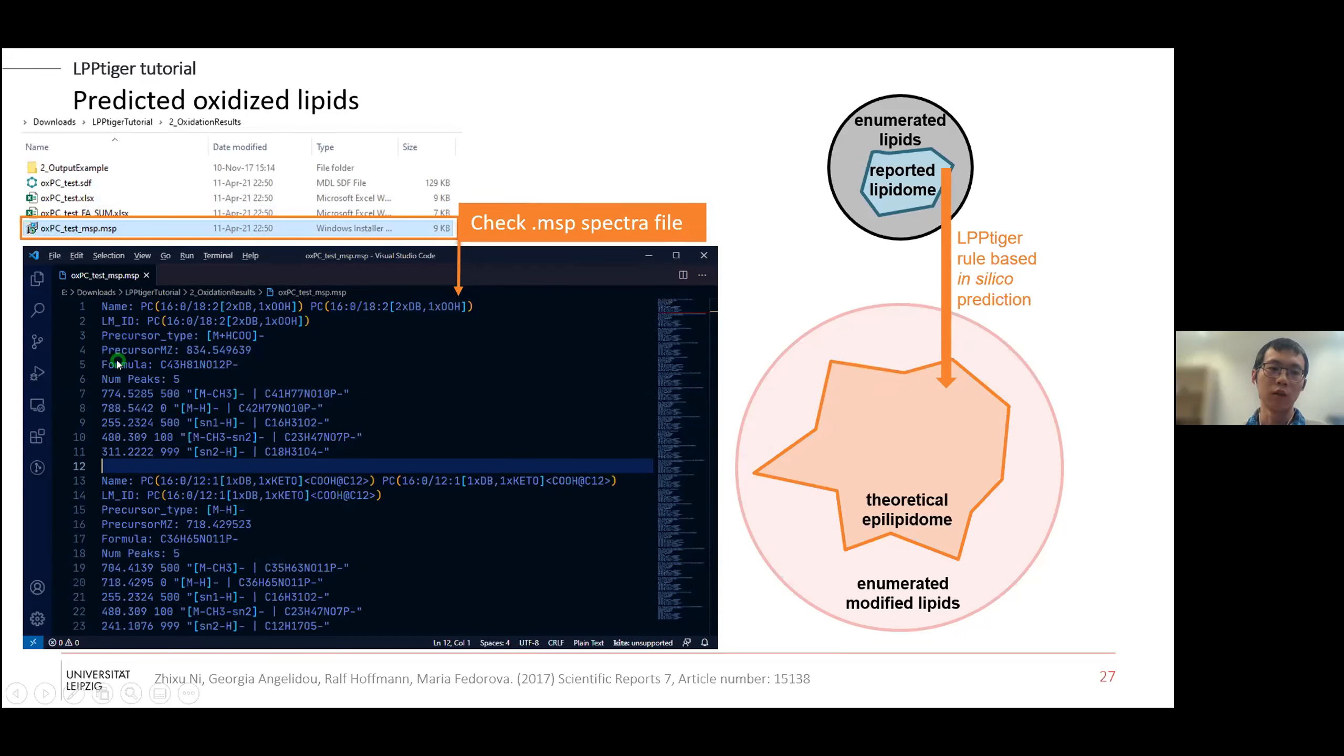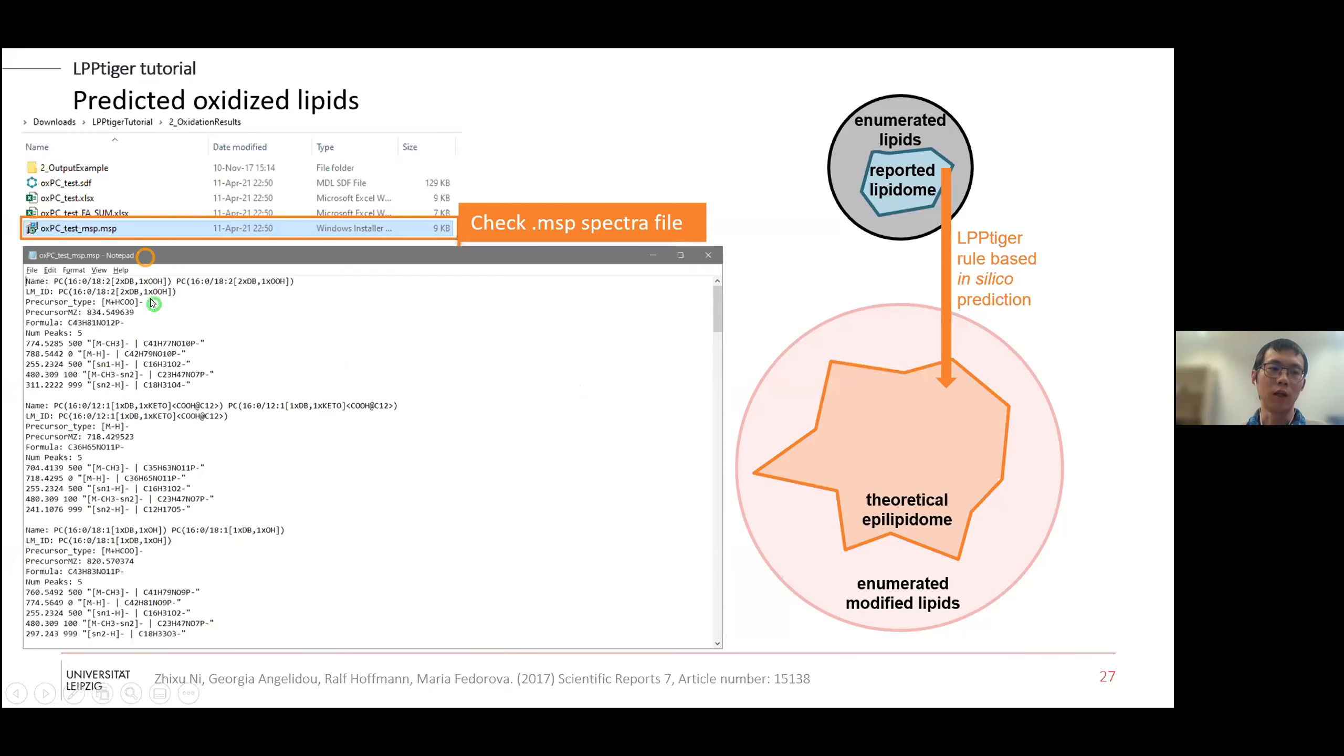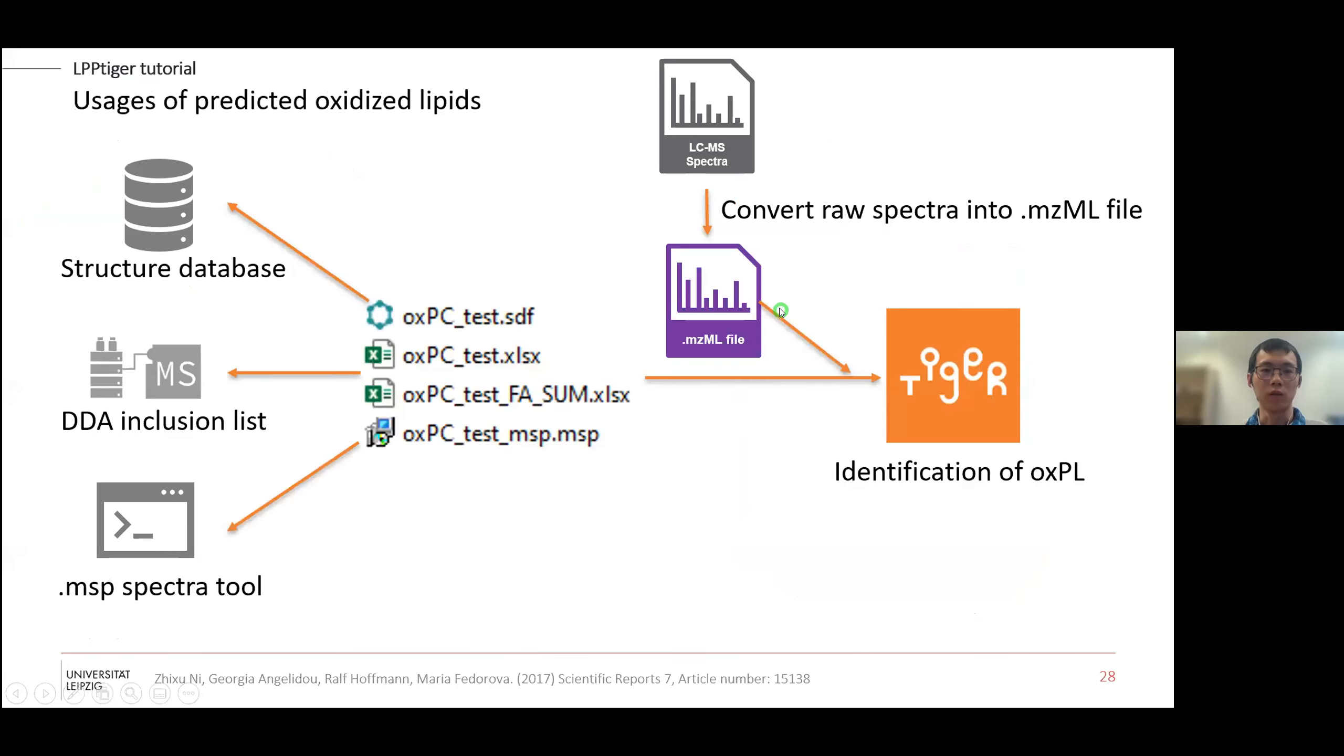We also generate additional files - the MSP library. It basically consists of the precursor type, m/z, formula, and m/z of the fragments, and the intensity, and also some remarks. This is for you to easily look at it. You can open it by any text editor, for example Notepad or other MSP compatible software. These are the four major predicted outputs. You can use SDF files from a structure database. You can use these two files to generate the DDA inclusion list for later analysis, or you can use this MSP file for other compatible software. You can also use these two files for later identification using the raw spectra, which converted to MZML spectra.